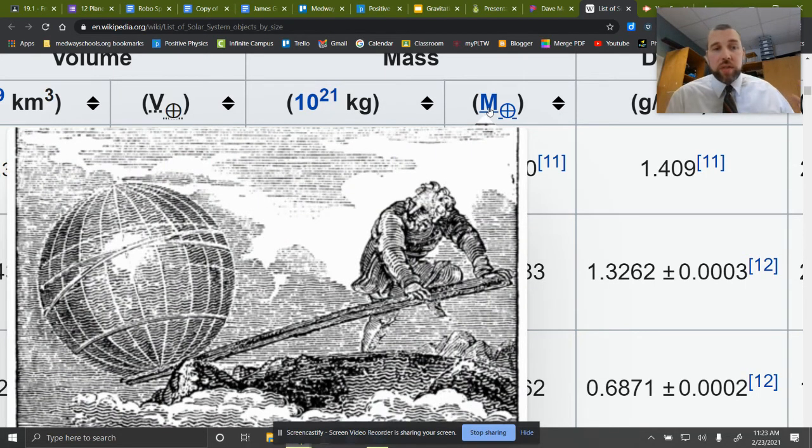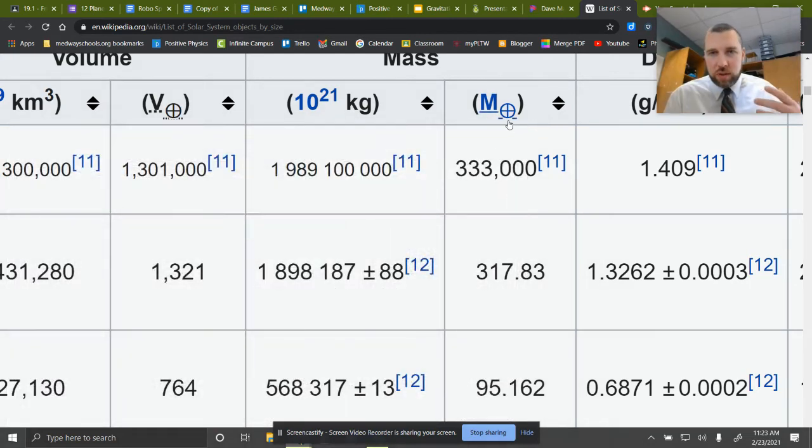And again, we have Earth masses. So with the little planet symbol down below, it's 317.83 times as massive as Earth, right? So when we do our two different ways, that's kind of the bits of information that we need.